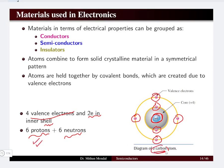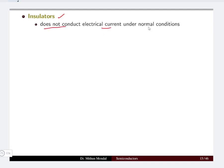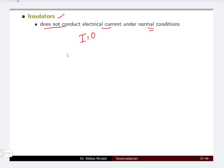We are discussing the carbon atom. Now let us differentiate the insulators, conductors and semiconductors in brief. Insulator does not conduct electric current under normal conditions. In normal conditions the current flowing through the insulator will be zero — no current will flow through the insulator.